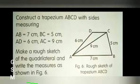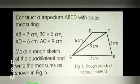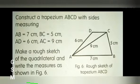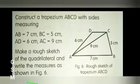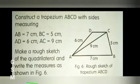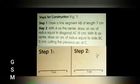BC is equal to 5 cm, AD is equal to 6 cm, and diagonal AC is equal to 9 cm. Make a rough sketch of the quadrilateral and write the measures as shown in the figure. Steps for construction: